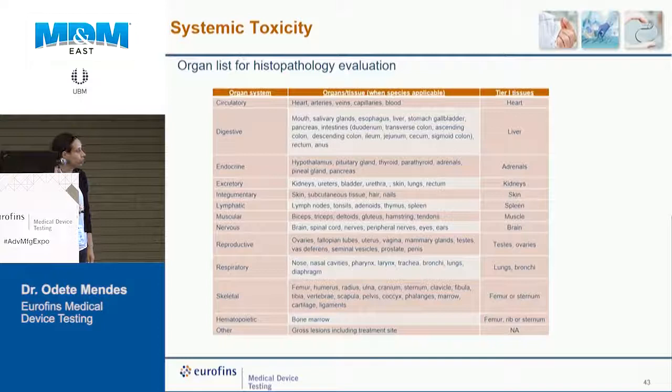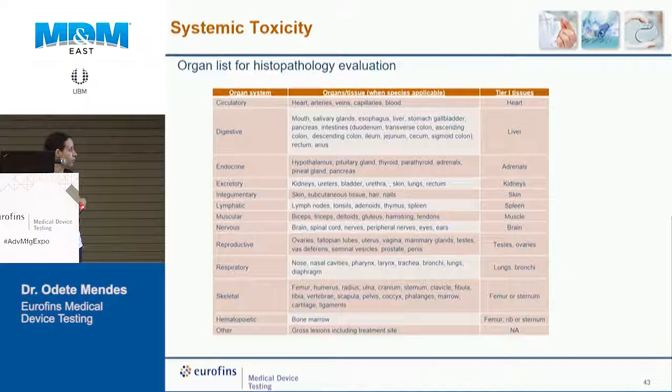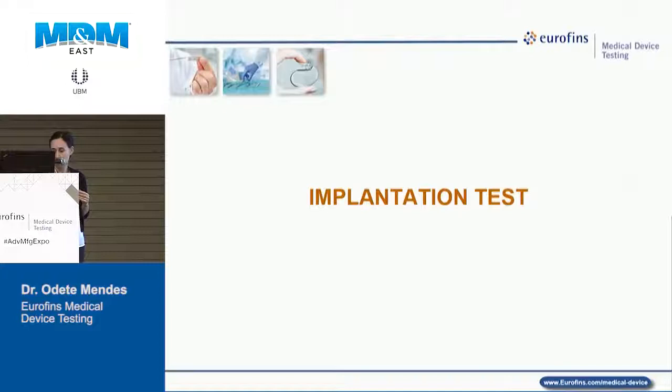Organ and tissue selection follows two tiers. Tier 1 covers the major organs and systems for subchronic or implantation studies. For carcinogenicity, chronic, and subchronic studies, a more extensive list covering virtually all organ systems is evaluated. The selection depends on the endpoints sought, available information, and the chemical profile of the extract.